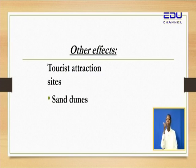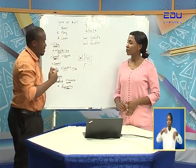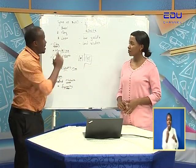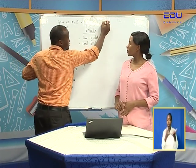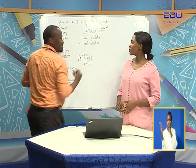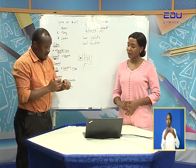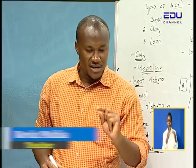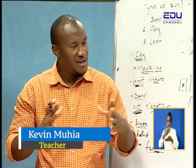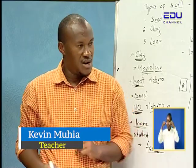Another positive effect — we have sand dunes. They are found in the deserts and are formed due to erosion. Remember, we have different agents of soil erosion: water and wind. These sand dunes are formed due to wind. Use your digital devices to find out how sand dunes are formed and how they look.